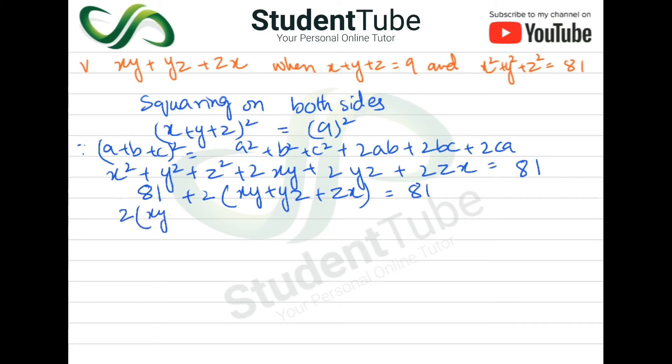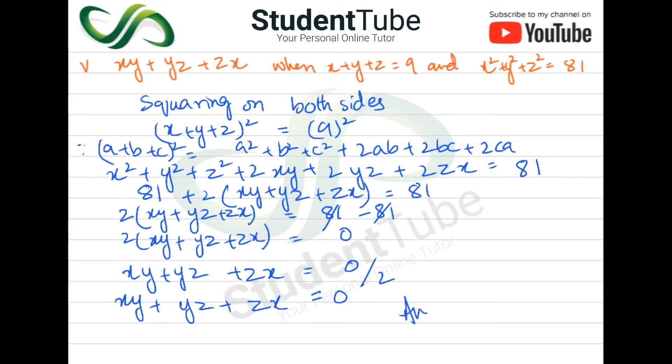Now 2(xy + yz + zx) = 81 - 81 = 0. So xy + yz + zx will remain, and this 0 divided by 2, so xy + yz + zx = 0. Answer.